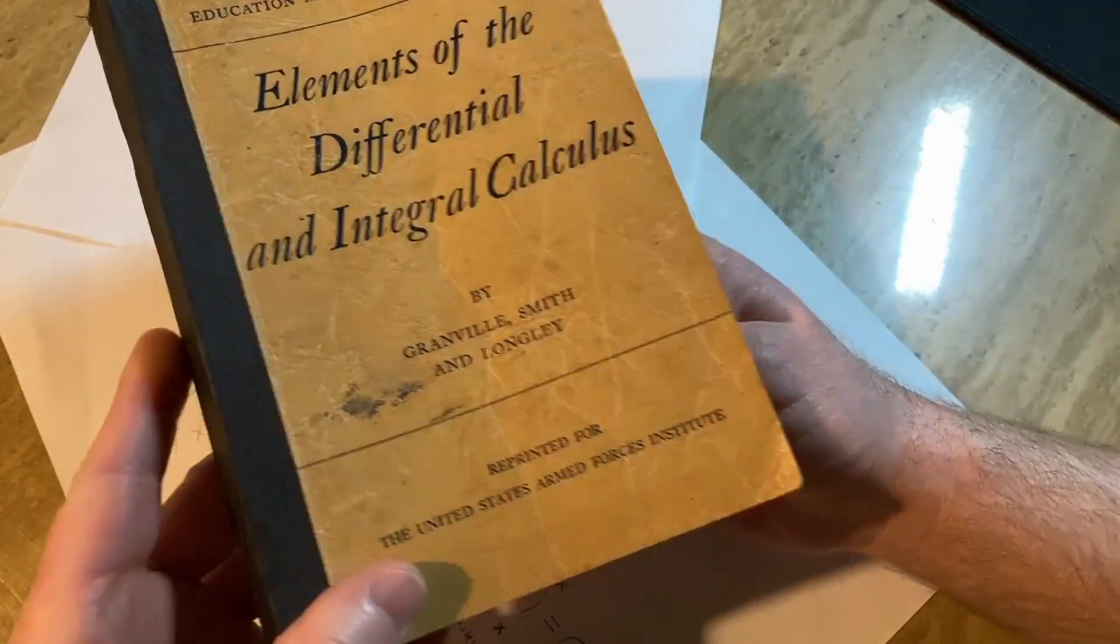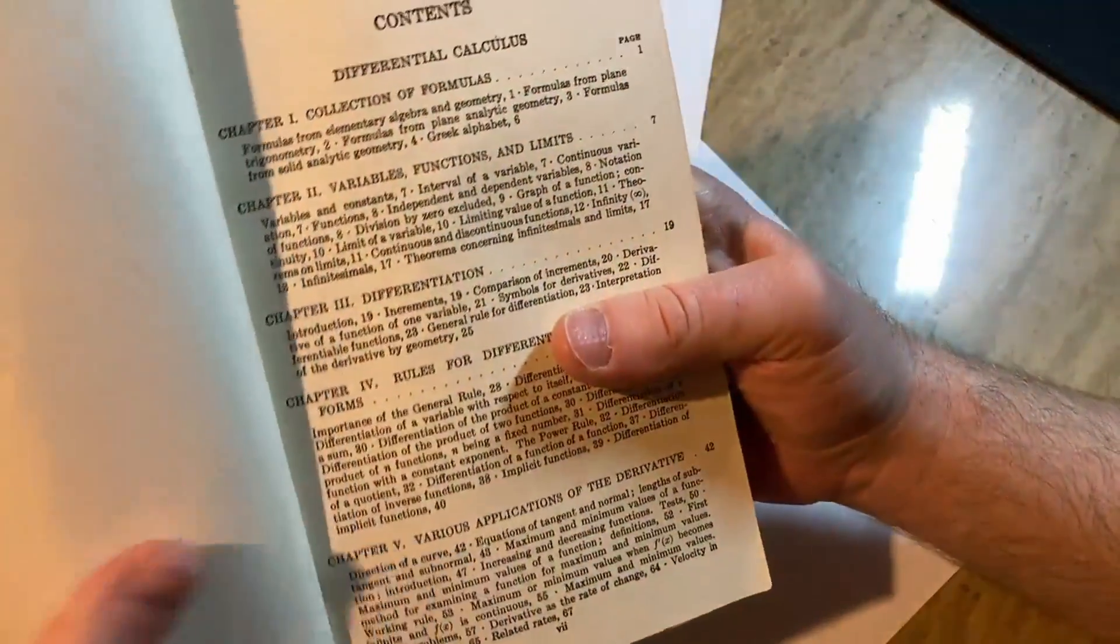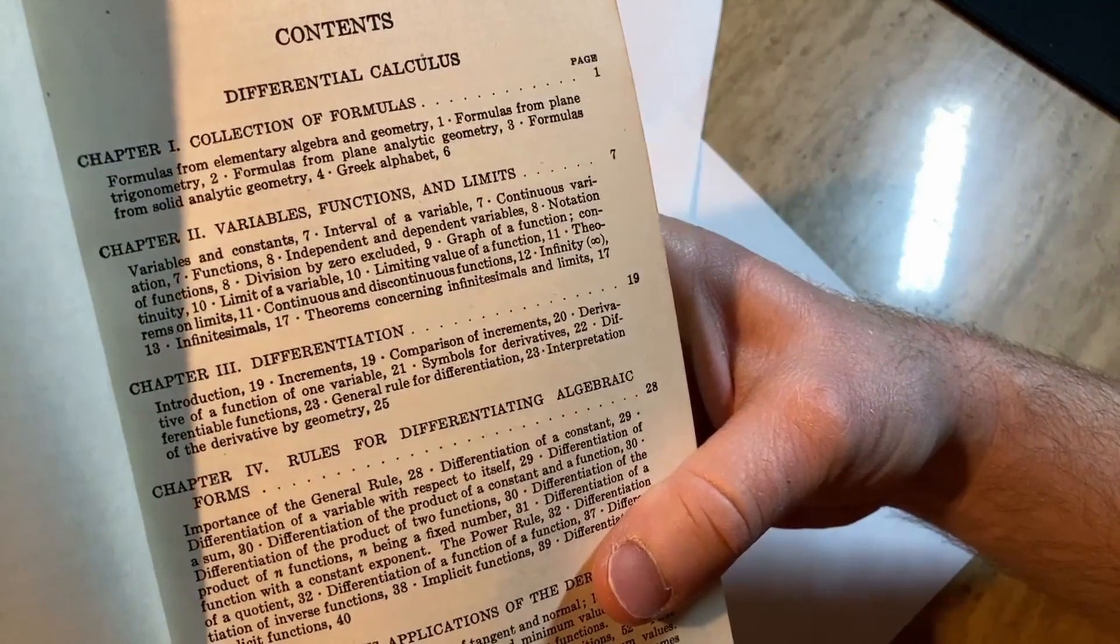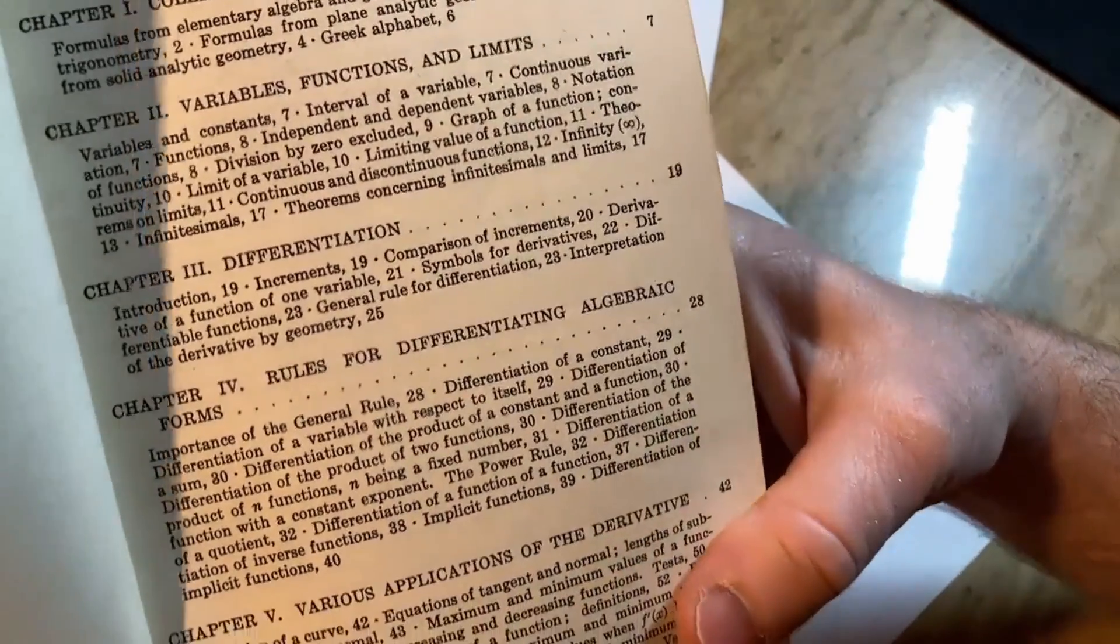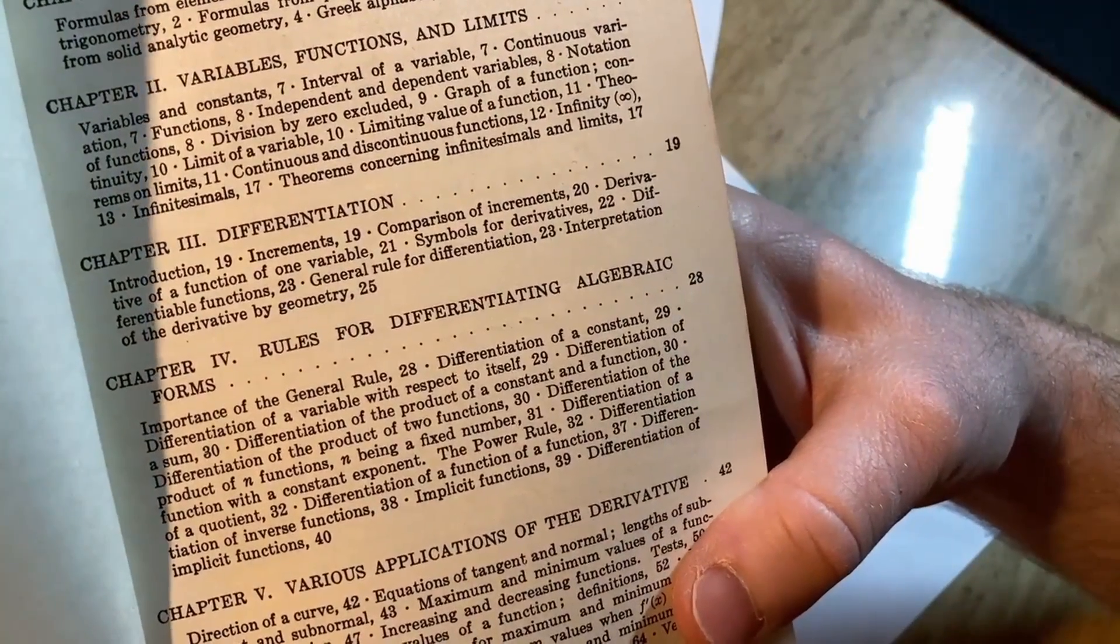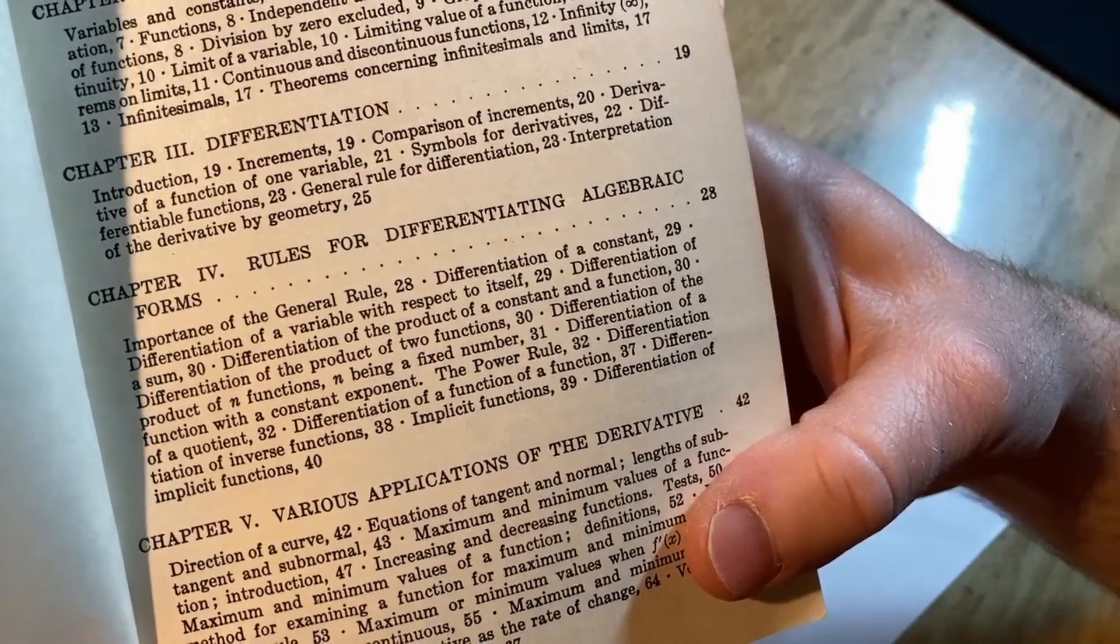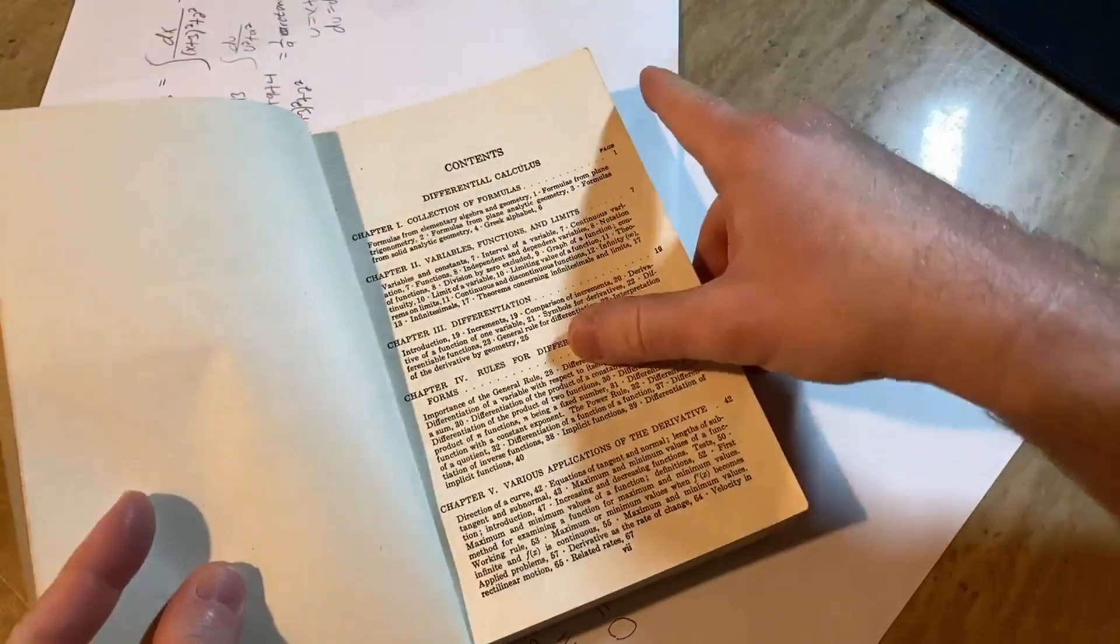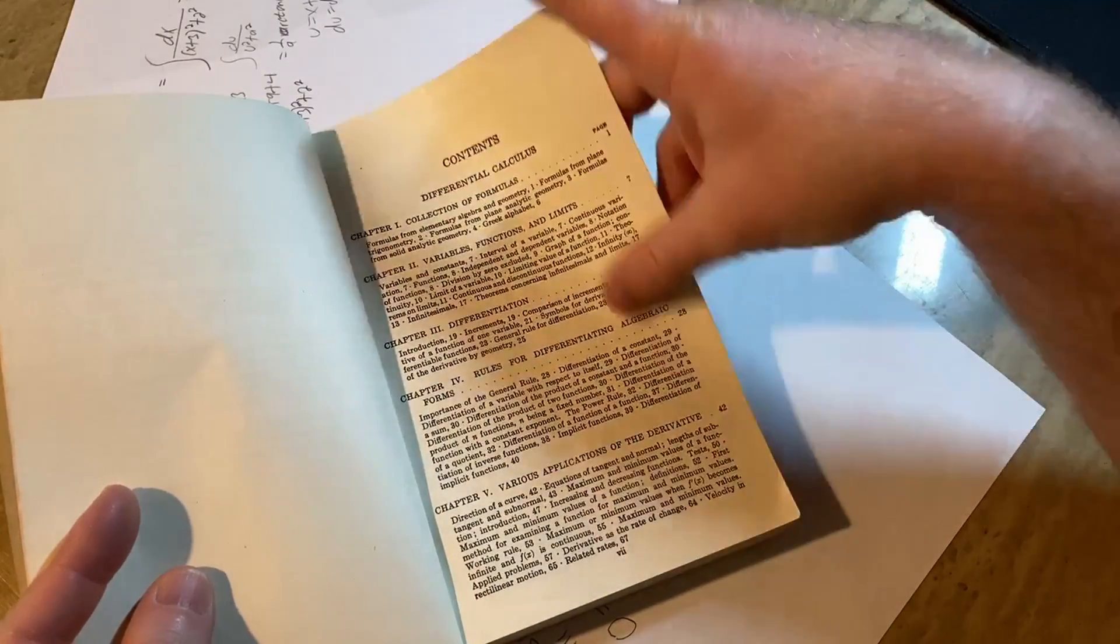This is the army manual, the army version. Let's look at the contents. Differential calculus. Variables, functions, and limits. Differentiation. Rules for differentiating algebraic forms. Various applications of the derivative.